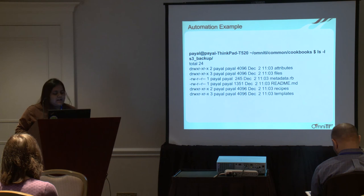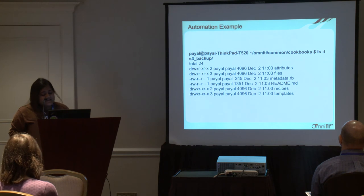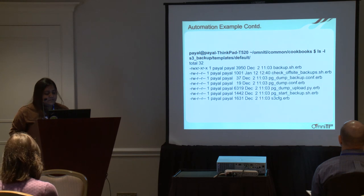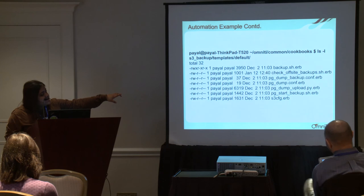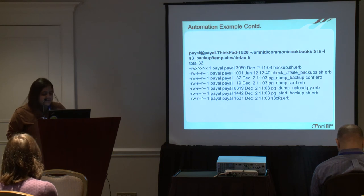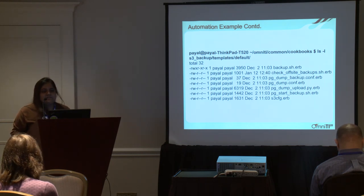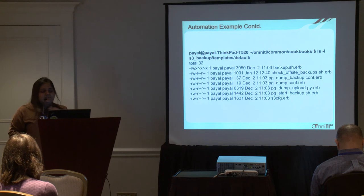Here's an example of automation — this is a Chef cookbook listing all the files involved in my S3 automation. You can see there are a number of backup scripts. The last one is the configuration file for S3cmd, and the pgdump upload script is the one that actually uploads files to S3. Once you're set up with this cookbook — or Ansible or Puppet, it doesn't matter which configuration manager you use — the overhead of moving around and failing over really goes down.